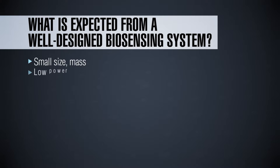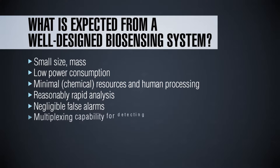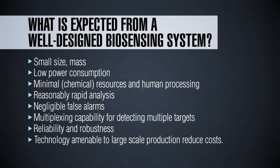When we talk about a biosensor or a lab on a chip, what exactly do we expect from a well-designed system? First we want the system to be small in size and mass. Low power consumption — that's critical if you want to have a battery operated system. Minimal chemical resources and hopefully minimal human processing. Reasonably rapid analysis so you don't have to wait a long time for results. And for biomedical application and healthcare, we expect the system to be very accurate with negligible false alarms.